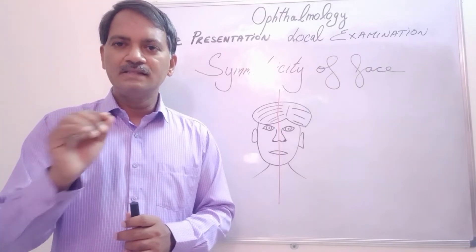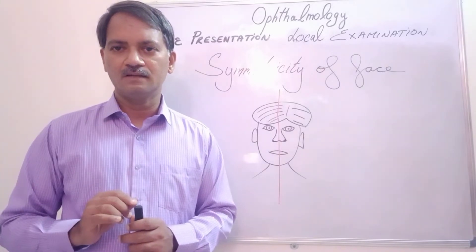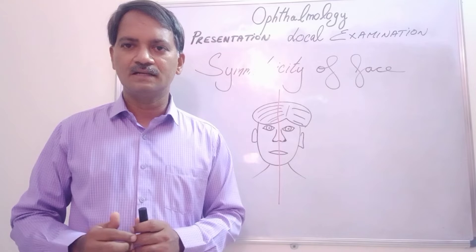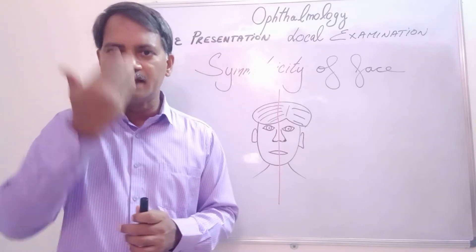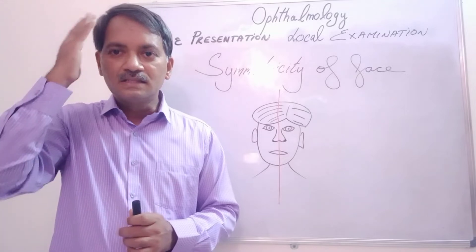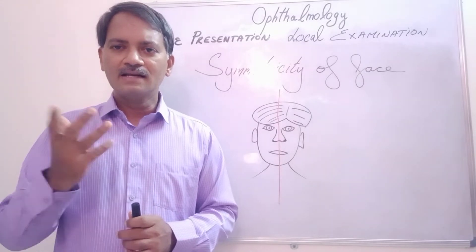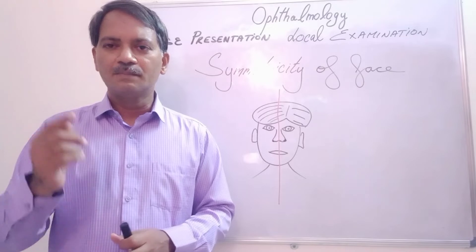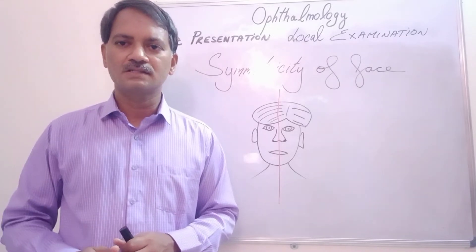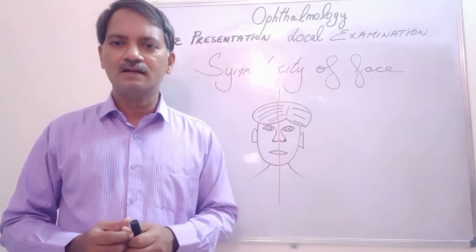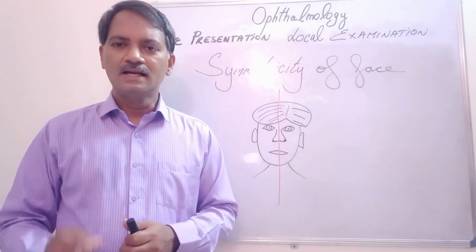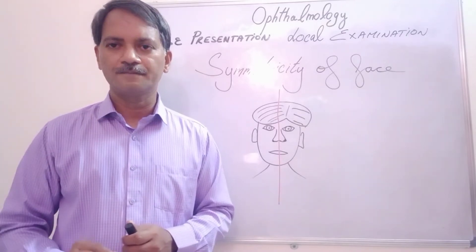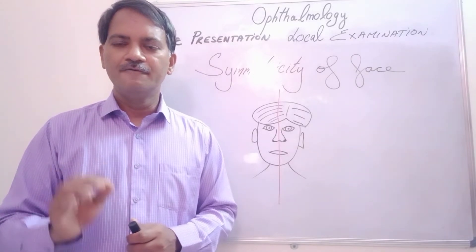We have to consider many things while saying the face is symmetrical. For example, I have a hair crease on my right side — this makes my face asymmetrical, but it is not clinically significant and will not help in making any diagnosis. Similarly, a mole on one side is also not clinically significant. We have to consider only clinically significant things. A classical example is facial nerve paralysis.